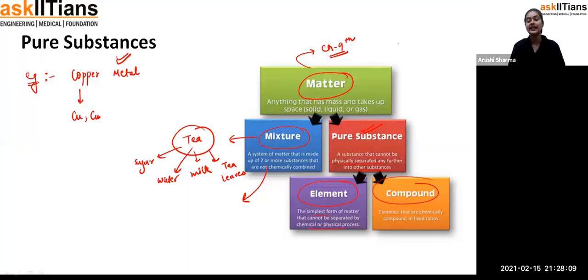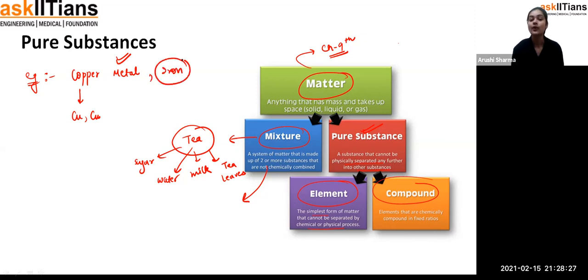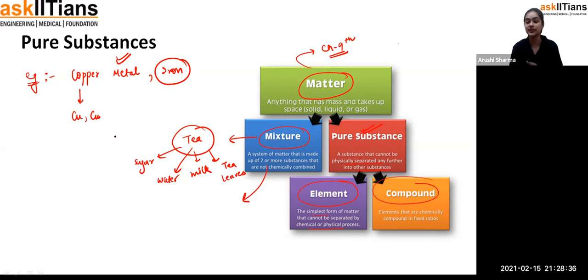An element is the very simplest form of matter and you cannot separate it further by chemical or physical means. For example, copper is an element — it contains only copper. Similarly, an iron box contains only and only iron. Since it contains only one component, you cannot separate it into different components. That is what we call an element.